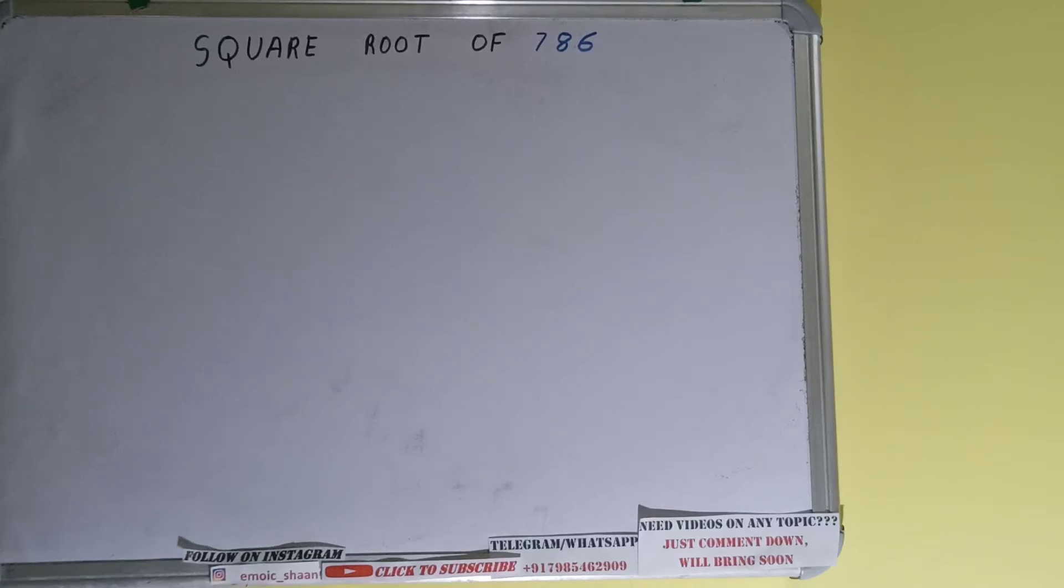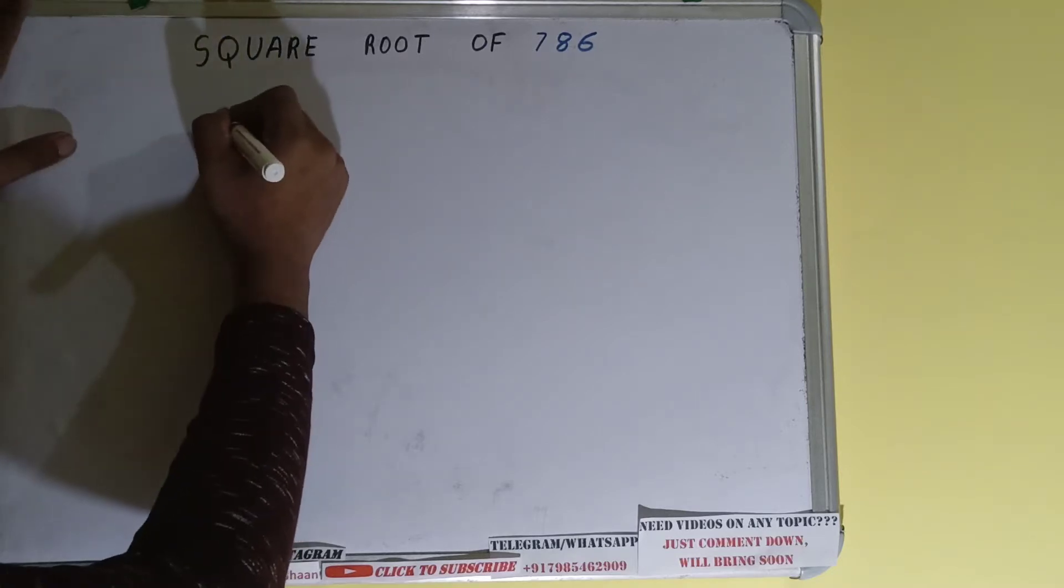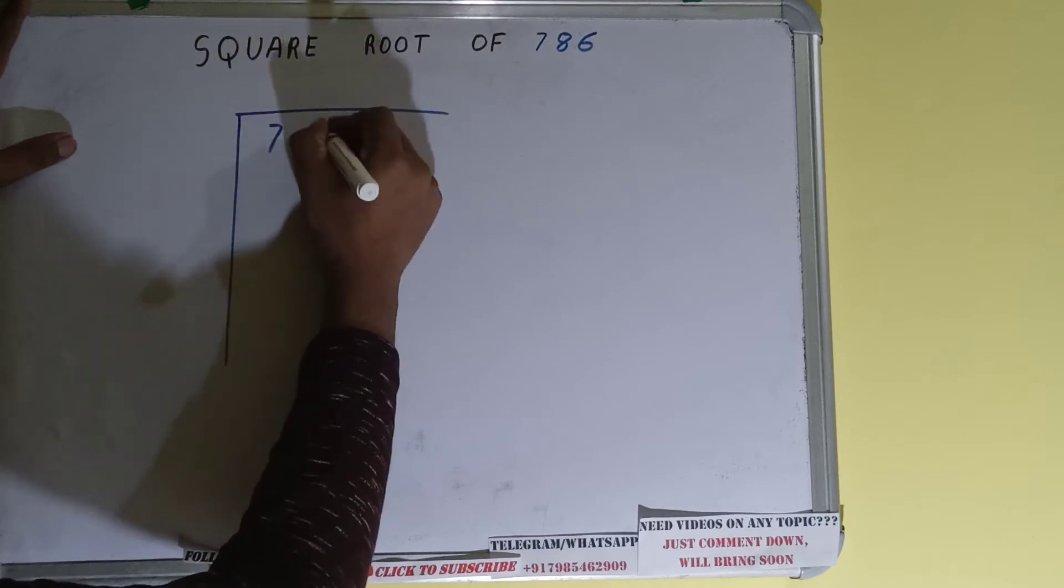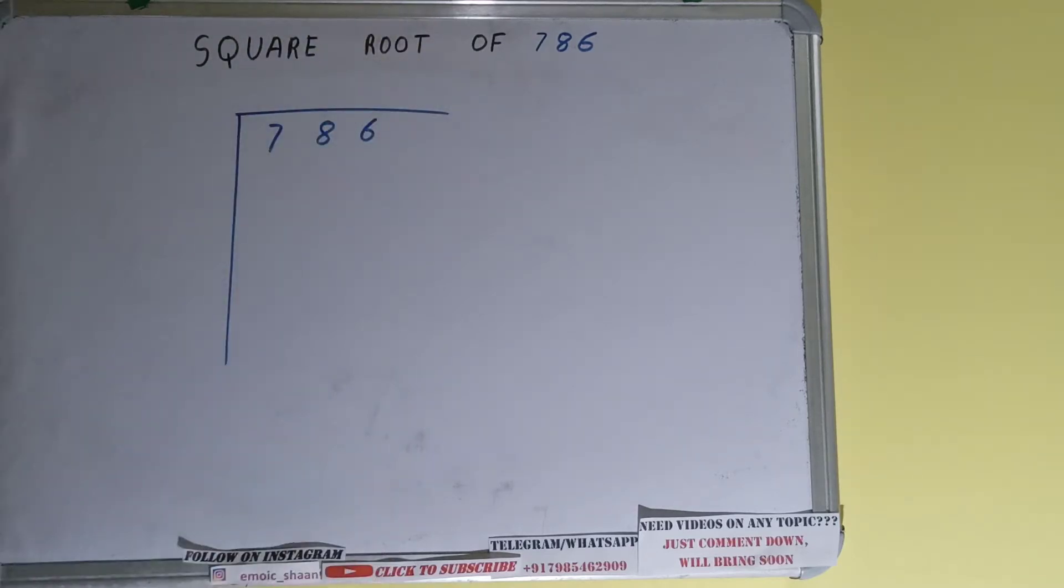Hello friends, and in this video I'll be helping you with the square root of the number 786. So let's start. We'll be using the division method. So first we need to write the number like this. The next thing we need to do is we need to form pairs from the right-hand side.